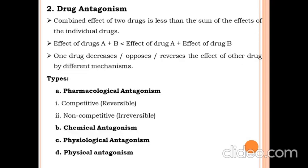The second major concept is drug antagonism. The combined effect of two drugs is less than the sum of the effects of the individual drugs — that is, the effect of drug A plus B is less than the effect of drug A plus the effect of drug B separately. One drug decreases, opposes, or reverses the effect of the other drug by a different mechanism, and finally drug antagonism takes place.